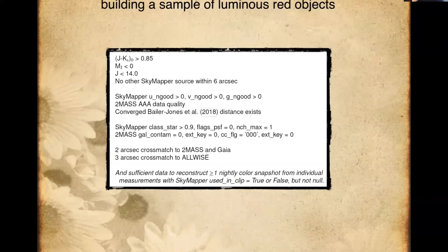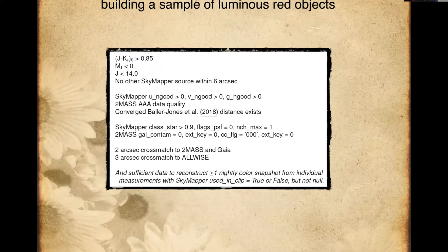Here's where we get into the granularity of a talk that is really more about archives and data retrieval than it is about that science. The first thing we do is build a sample of luminous red objects — what we really want is a sample of cool giants, of red giants, to select symbiotic stars from in SkyMapper parameter space. But there are going to be contaminants.